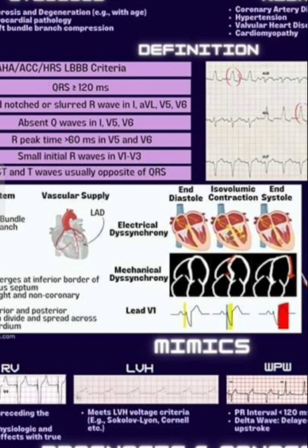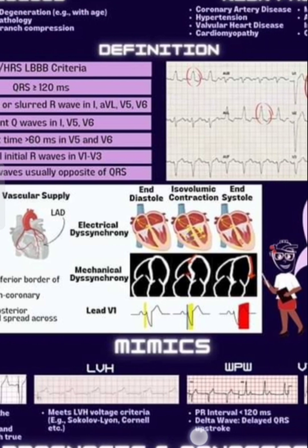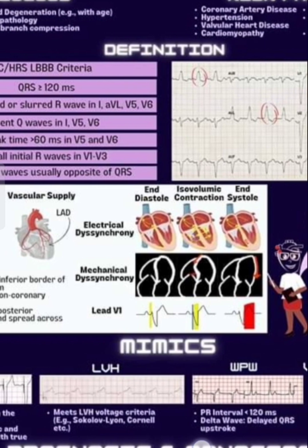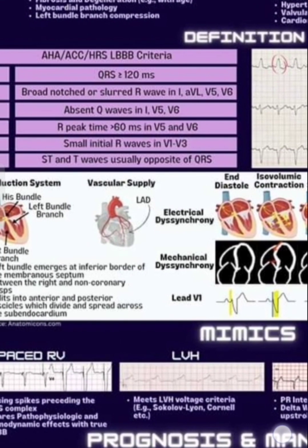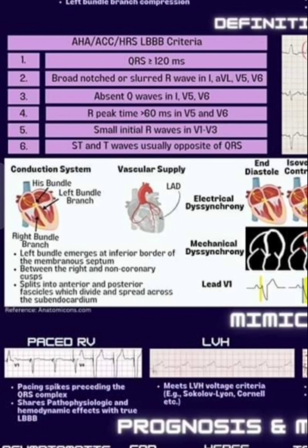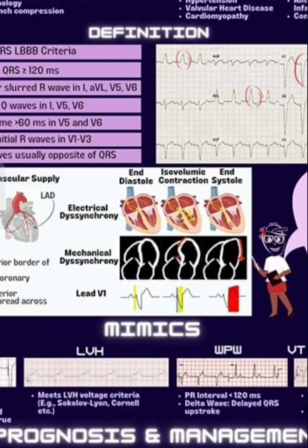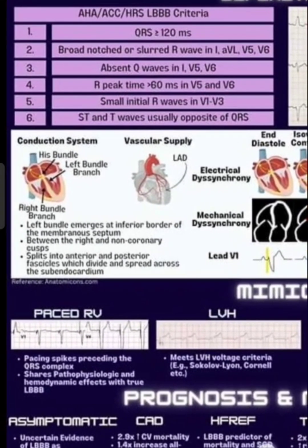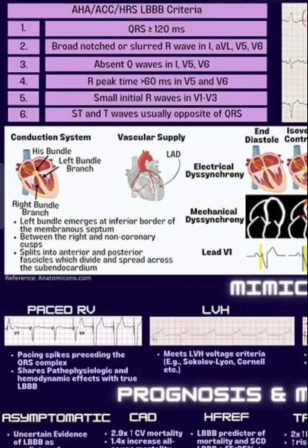LBBB mimics include WPW syndrome (PR interval less than 120 milliseconds with delta wave), LV hypertrophy, and paced RV rhythm (where basic pacing spikes precede the QRS). Regarding prognosis and management, there is uncertain evidence for LBBB as a predictor of adverse events in asymptomatic people.